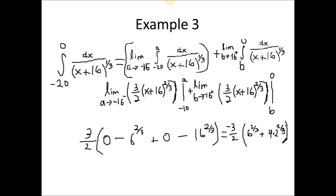As a approaches negative 16 from the left, that side will go to 0 minus 6 to the 2 thirds power. As b approaches minus 16 from the right, that side yields us 0 minus 16 to the 2 thirds power. 16 to the 2 thirds power can also be written as 4 times 2 to the 2 thirds power.